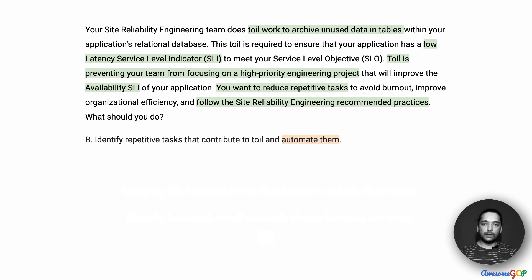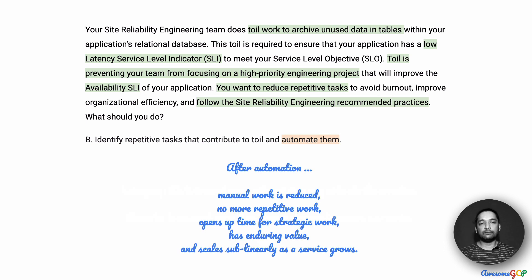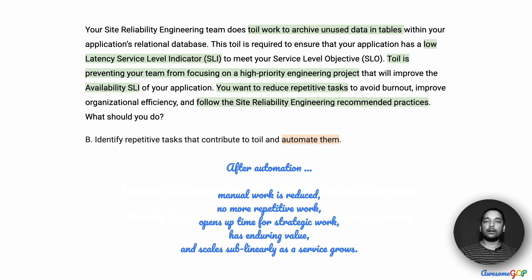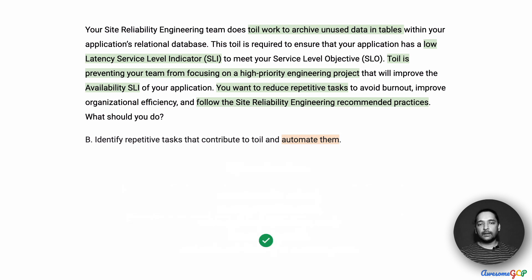Option B suggests that we identify the repetitive tasks that contribute to TOIL and automate them. Of course, this is very straightforward — the answer was screaming at us from the question itself. After automating, we have reduced the manual work; the system can take care of it by running a cron job or a timed job based on some event. We no longer deal with repetitive manual work, and we have more time for strategic work. It has enduring value, and it will scale sub-linearly even as the service grows. Therefore, B is the best option.